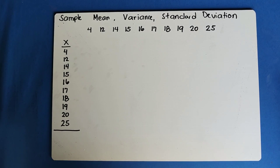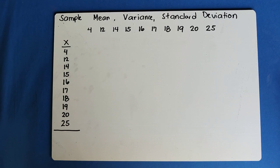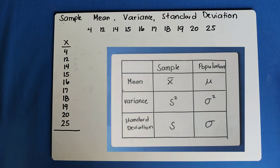But before that, please allow me to emphasize that the symbols used in sample mean, sample variance, and sample standard deviation are different from the symbols used in population mean, population variance, and population standard deviation. Look at the pictures — these are the differences between the symbols used in samples and the symbols used in population.